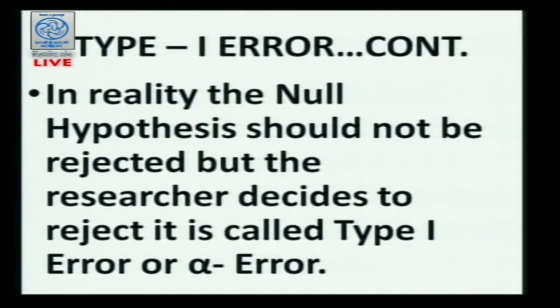You have to be very careful — that is why the lowest level has been decided as 0.05, and that should be used by all researchers. In reality, the null hypothesis should not be rejected, but the researcher decides to reject it — this is called Type 1 error, or also called the alpha error. The researcher rejects it because he has increased the error, and by increasing the error, he has lowered the level of significance.